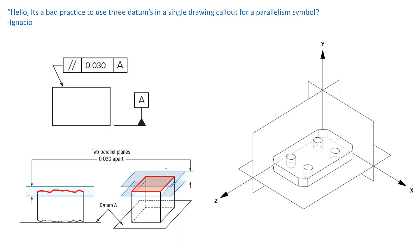Now, Ignacio didn't specify whether the parallelism was to be for a surface or a feature of size, but the rule still applies for both, and I will show you both. So just looking here in the beginning, we're talking about parallelism on a surface.